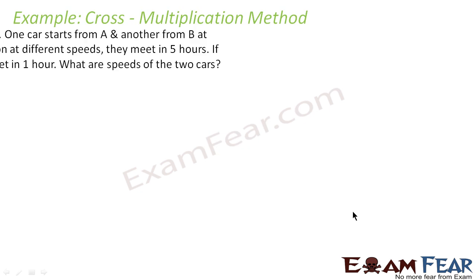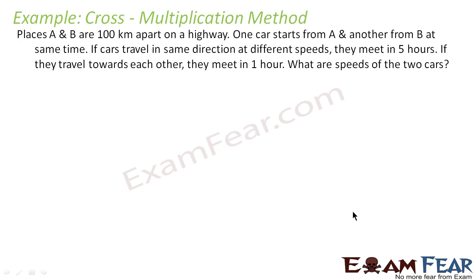For more examples of the cross multiplication method, the question says: place A and B are 100 km apart on a highway. One car starts from A and another car starts from B at the same time. If the cars travel in the same direction at different speeds, they meet in 5 hours. If they travel towards each other, they meet in 1 hour. We have to find the speed of the two cars.